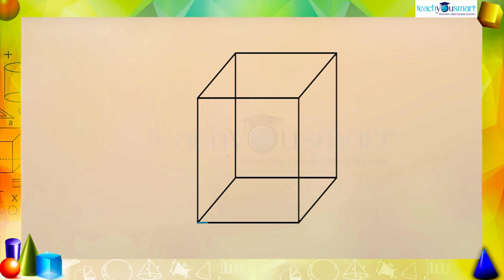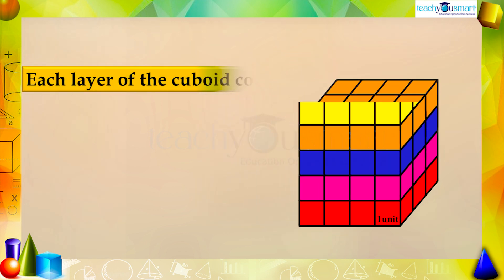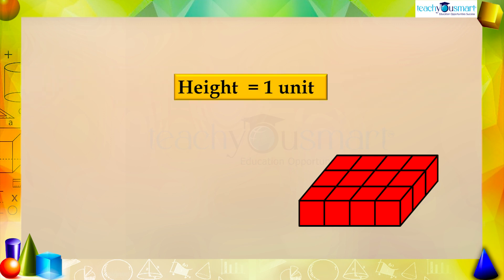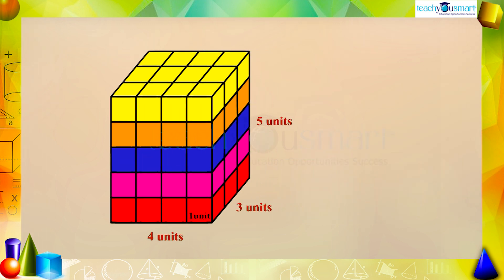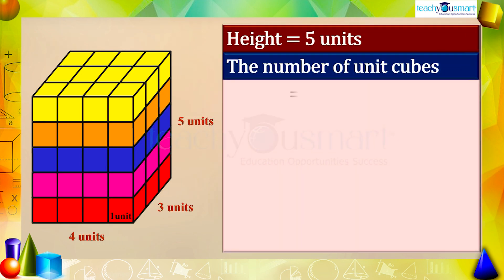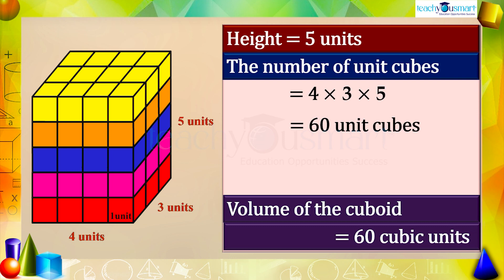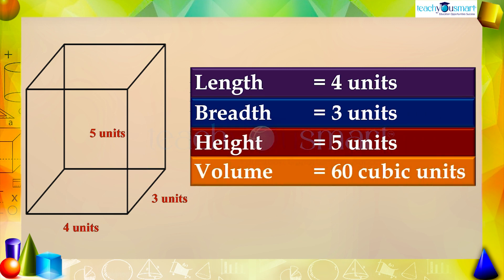Similarly we can find the volume of a cuboid. Take a cuboid with a length of four units, breadth of three units, and a height of five units. If we divide the cuboid into unit cubes, each layer of the cuboid consists of four multiplied by three unit cubes. The height of each layer is one unit, but the given cuboid has a height of five units. Then the number of unit cubes is four multiplied by three multiplied by five, which equals sixty unit cubes. That is, the volume of the cuboid equals sixty cubic units.